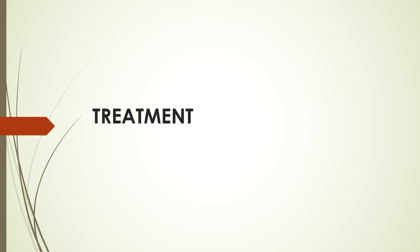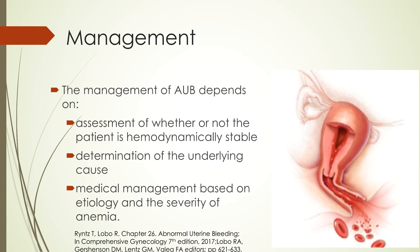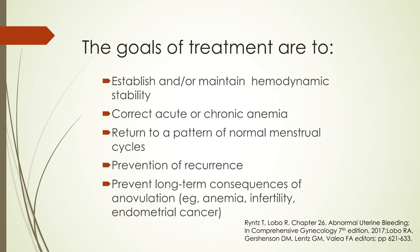For the last part, we discuss the treatment of both acute and chronic AUB. The management depends on assessment of hemodynamic stability, determination of the underlying cause, medical management based on etiology, and the severity of anemia. The goals of treatment are to establish or maintain hemodynamic stability, correct acute or chronic anemia, return to a pattern of normal menstrual cycles, prevent recurrence, and prevent long-term consequences of anovulation such as anemia, infertility, and endometrial cancer.